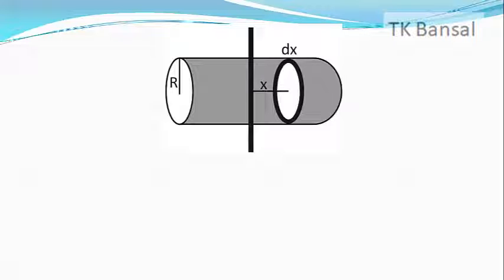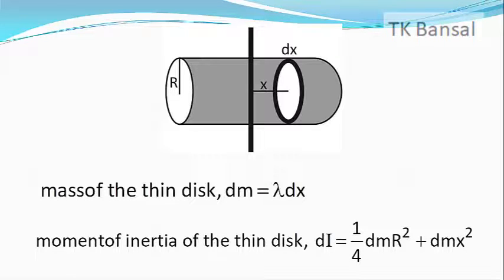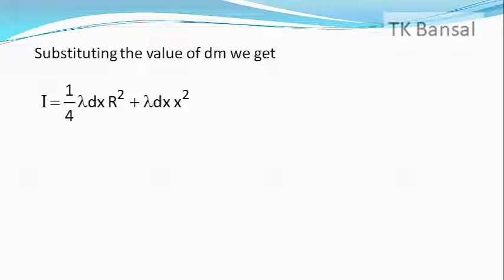Let us now consider a thin disk of thickness dx at a distance of x from the axis of rotation. The mass of the thin disk, dm, is equal to lambda dx. Using the parallel axis theorem, the moment of inertia of the thin disk about the axis of rotation, di, is equal to one by four dm r squared plus dm into x squared. Substituting the value of dm equals lambda dx, we get i equals one by four lambda dx into r squared plus lambda dx into x squared.